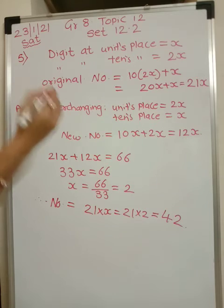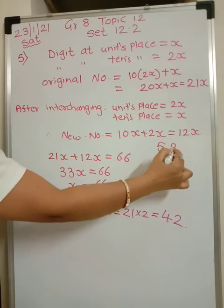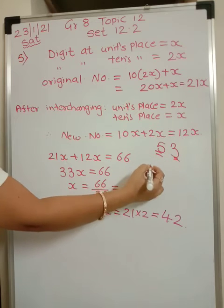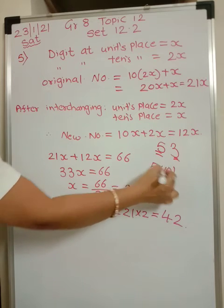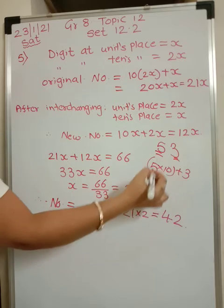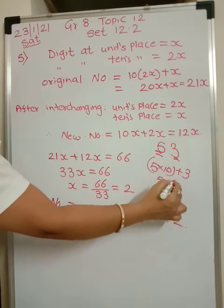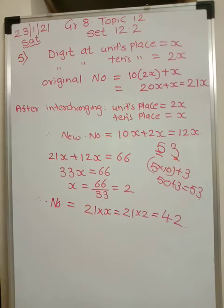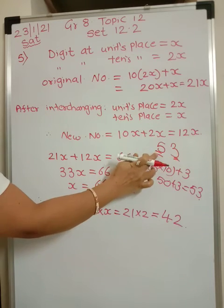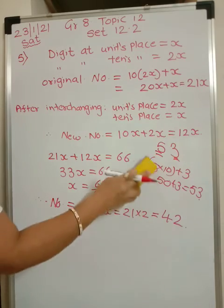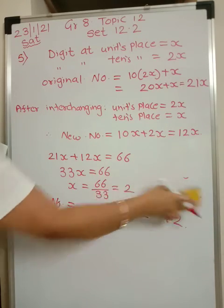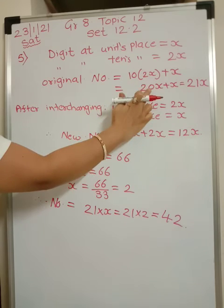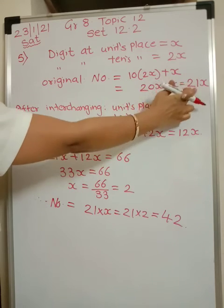For example, for number 53: digit at units place is 3 and digit at tens place is 5, so we get 5 into 10 plus 3, which is 50 plus 3 equal to 53. Using this, the original number is 10 into 2x plus x, which is 20x plus x equal to 21x.